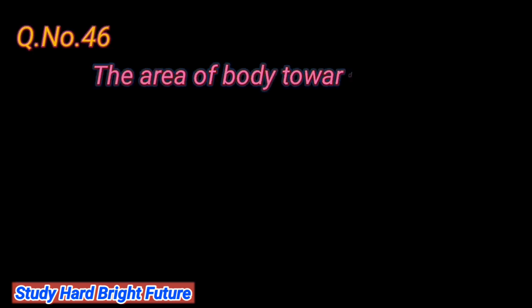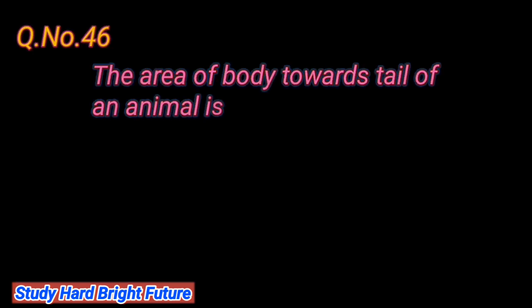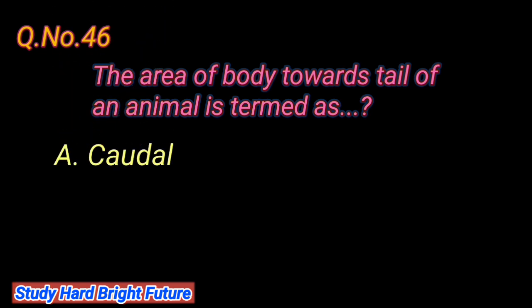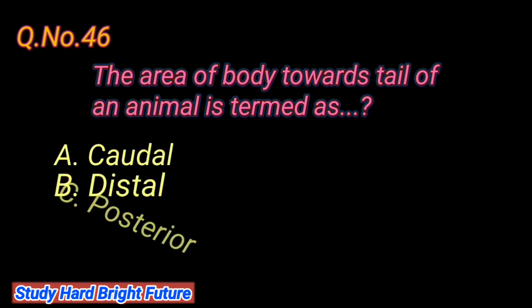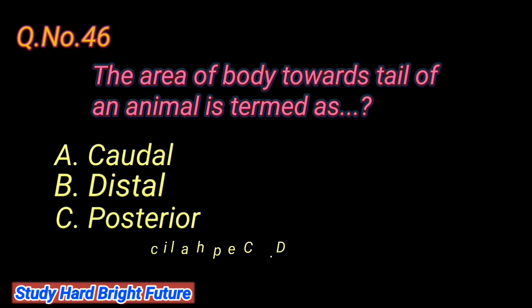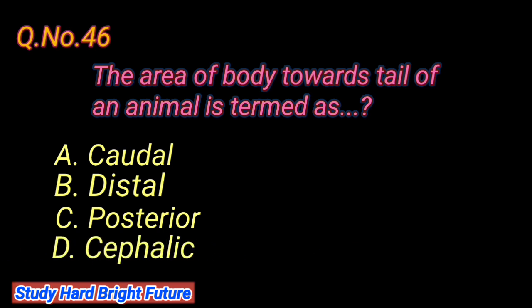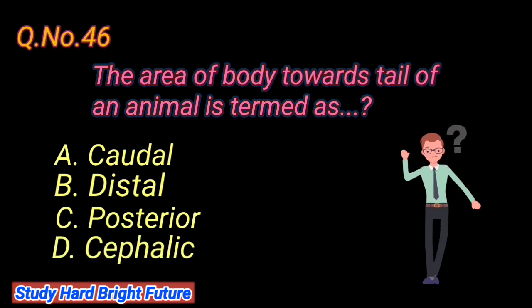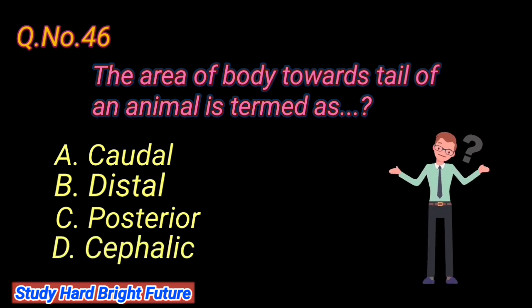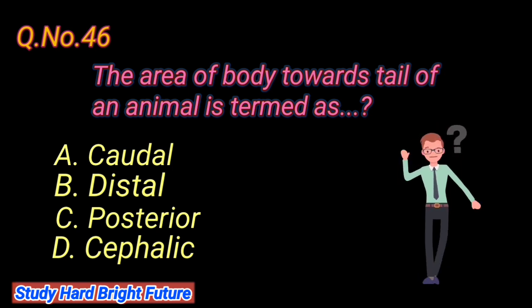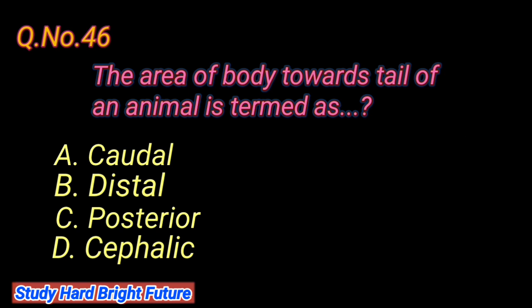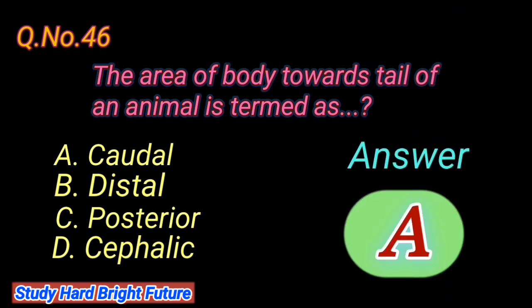Question number 46: The area of body towards the tail of an animal is termed as. A. Caudal, B. Distal, C. Posterior, D. Cephalic. The right answer is A. Caudal.